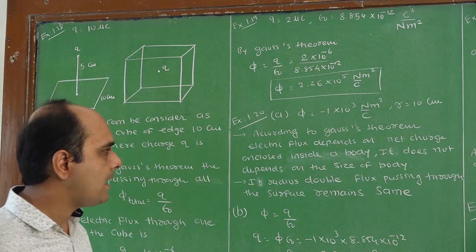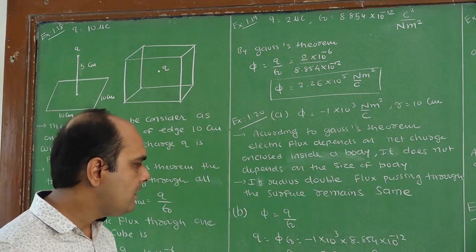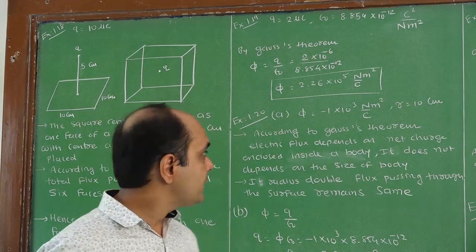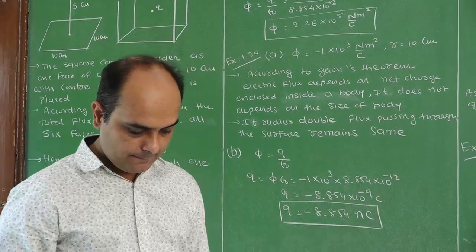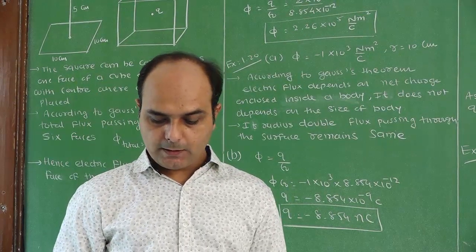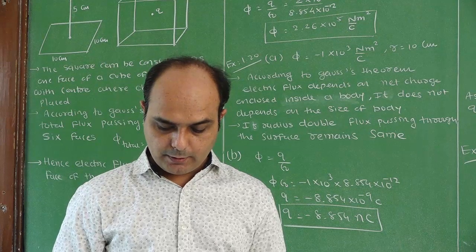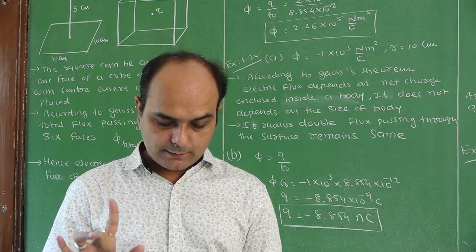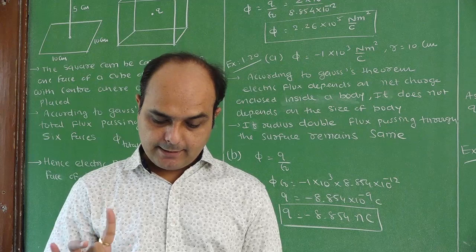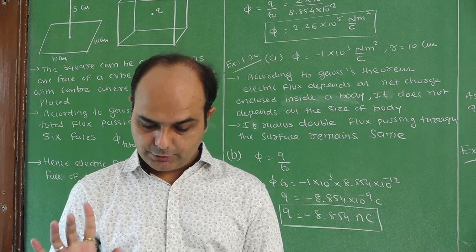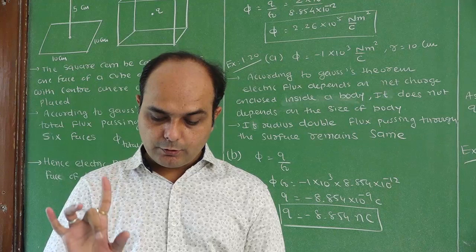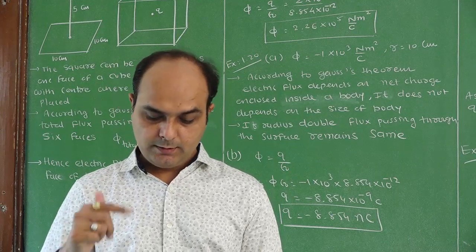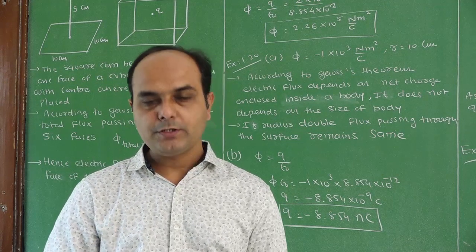Now we are moving to the next example, that is example number 20. Again it is related to Gauss theorem. A point charge causes an electric flux of minus 1 into 10 to the 3 Newton meter square per coulomb to pass through a spherical Gaussian surface of 10 cm radius centered on the charge. First: if the radius of the Gaussian surface were doubled, how much flux would pass through the surface? Second: what is the value of the point charge?